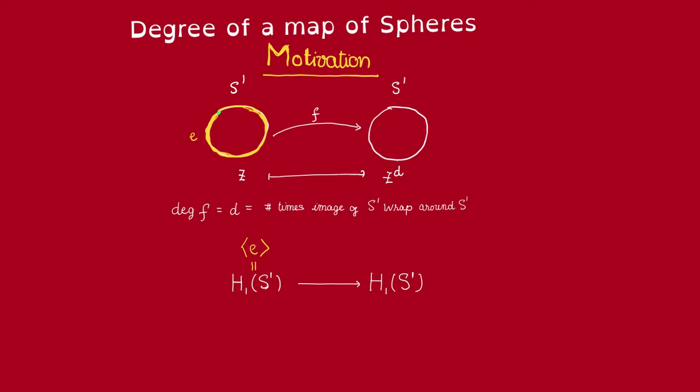Recall that the one homology group of S¹ is free and generated by this one simplex. Saying that the image of f wraps around the circle d time is equivalent to saying that the image of this one simplex e under f is homologous to d times e.